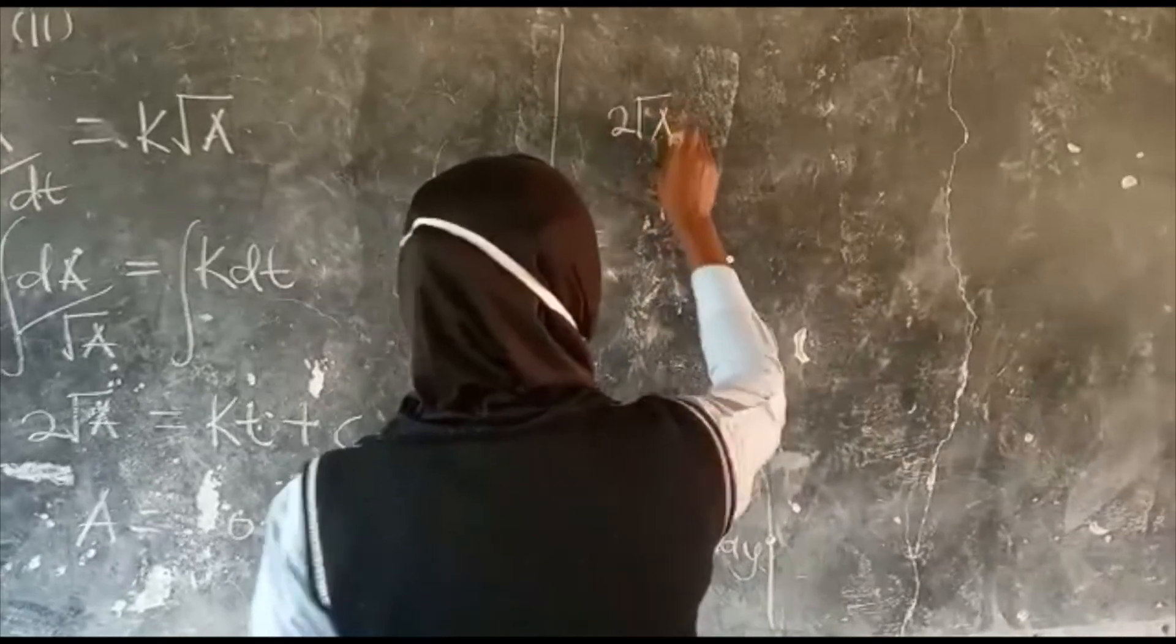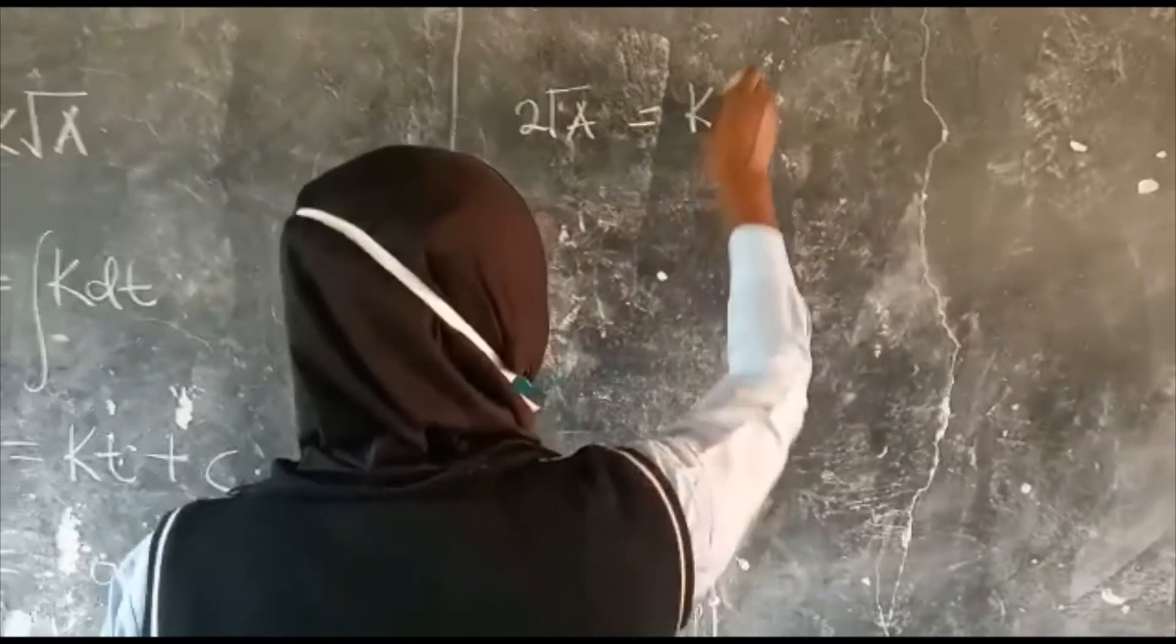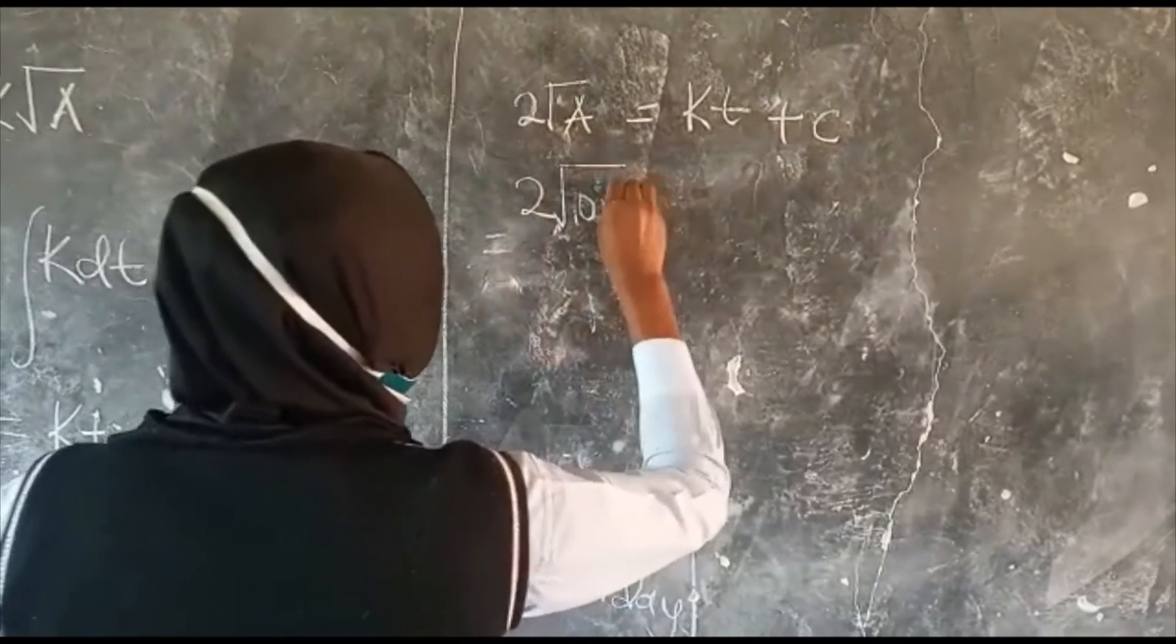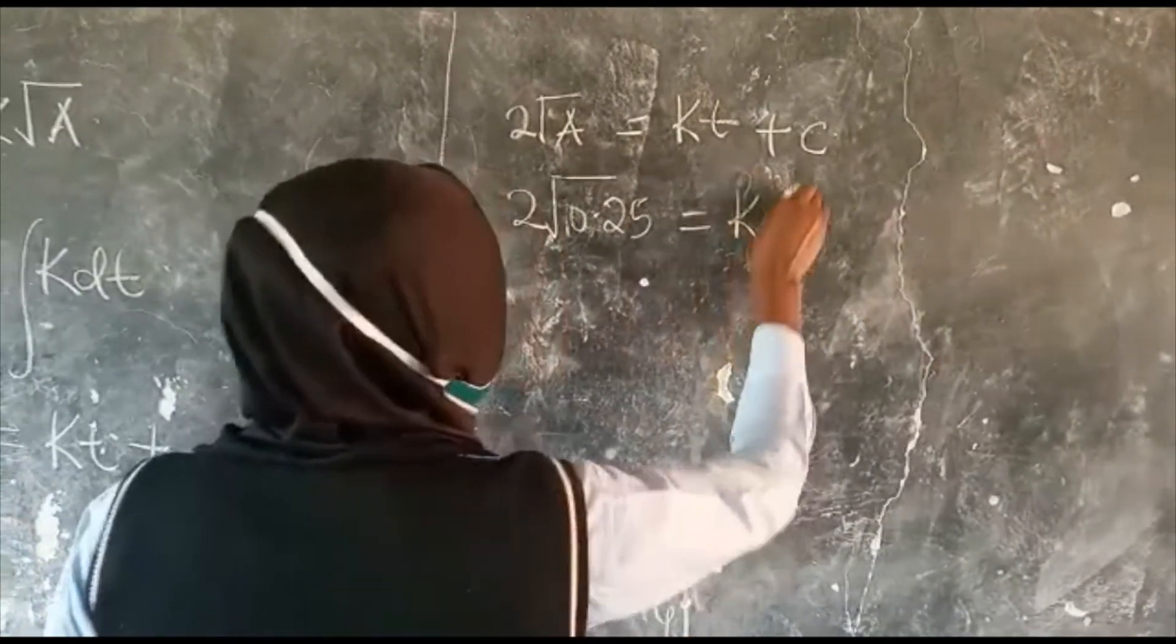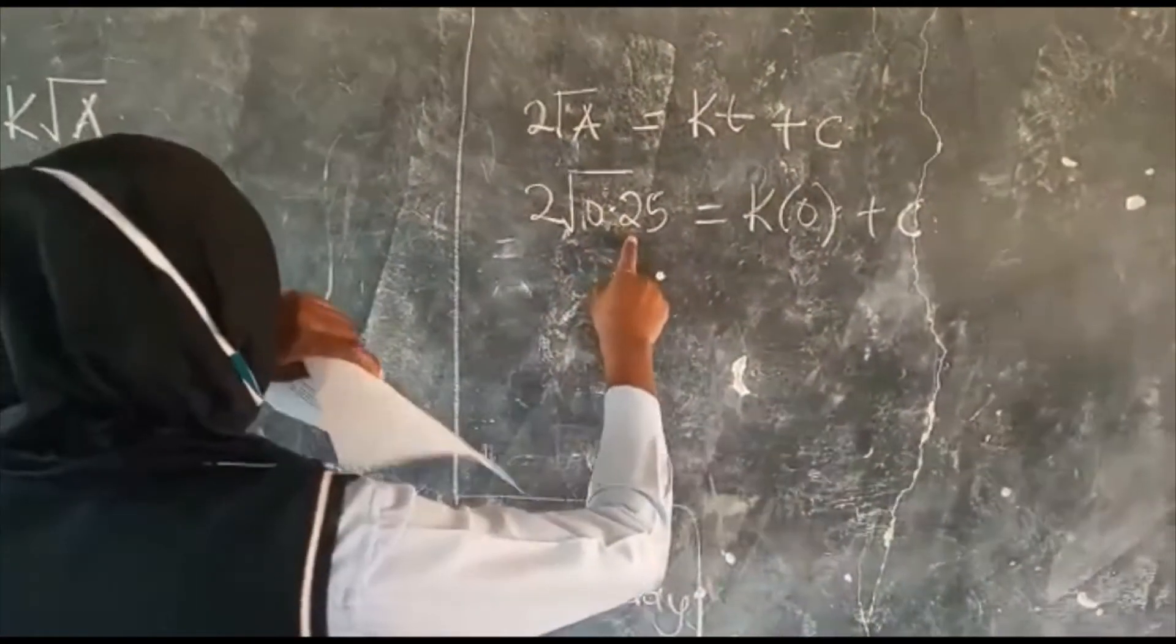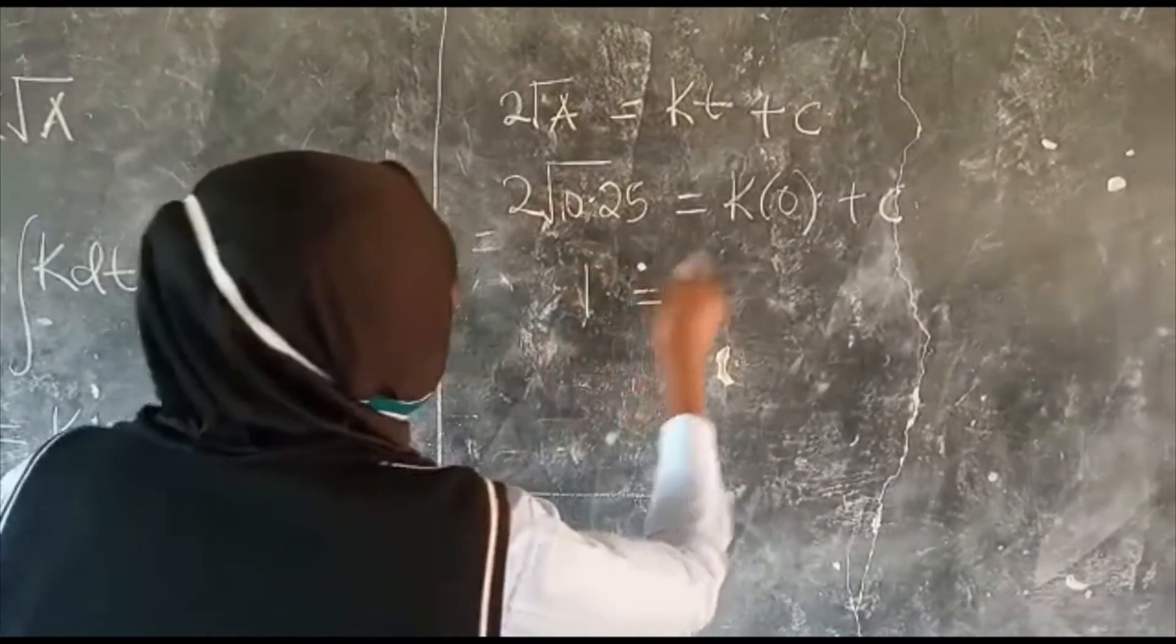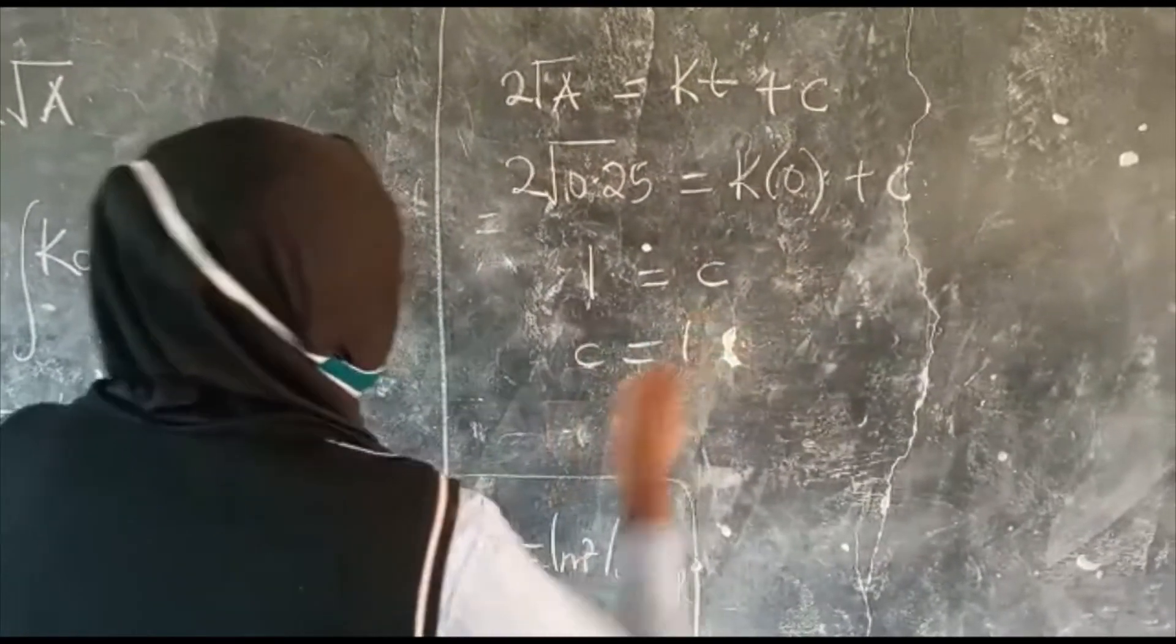So, 2 root A is equal to k plus c, but A is equal to 2 into root of 0.25 meters squared, which is 0, plus c. My square root of 0.25 is 0.5, 0.5 times 2, it is 1 equal to, this is 0, therefore our c is equal to 1.